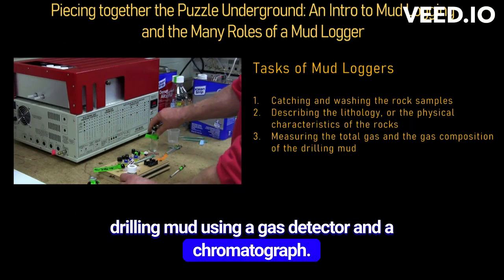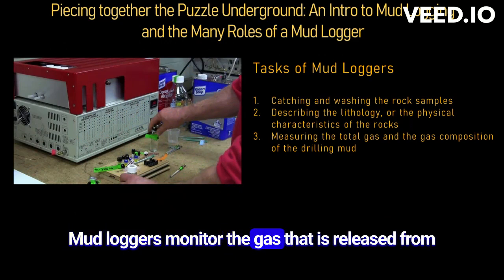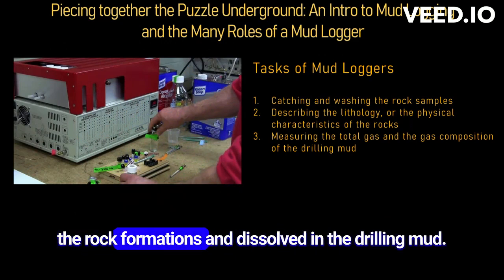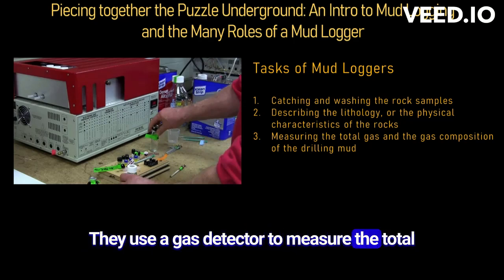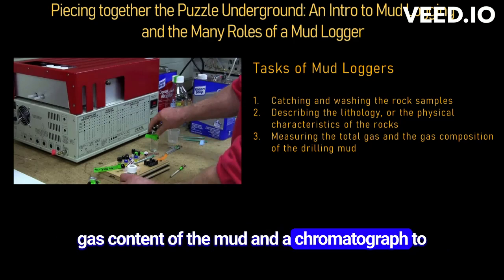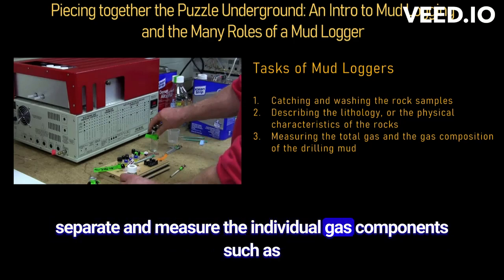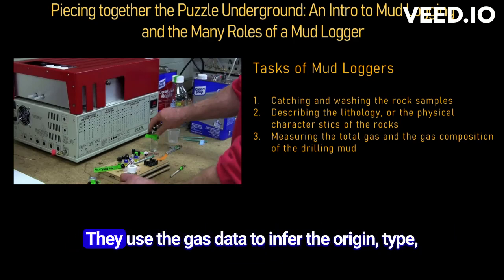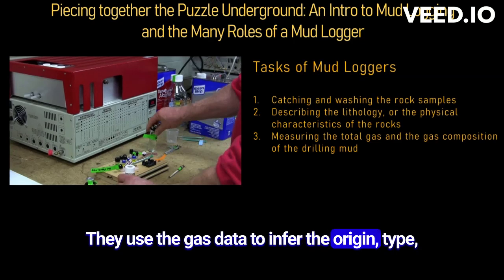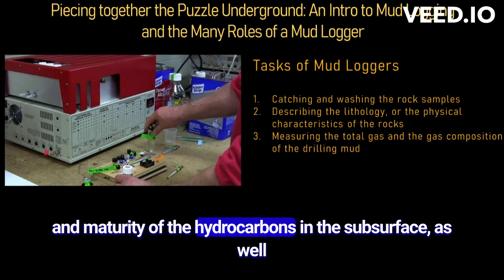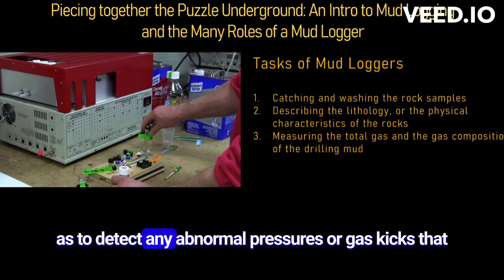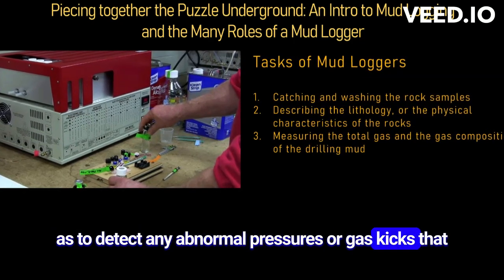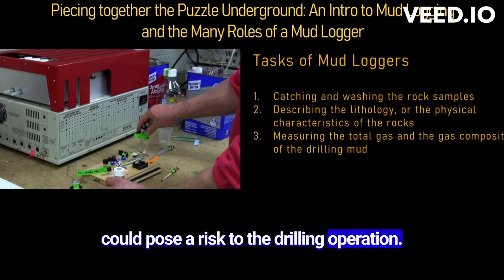Mud loggers measure the total gas and the gas composition of the drilling mud using a gas detector and a chromatograph. They monitor gas released from rock formations and dissolved in the drilling mud, using the gas detector to measure total gas content and the chromatograph to separate and measure individual gas components such as methane, ethane, propane, butane, and pentane. They use the gas data to infer the origin, type, and maturity of subsurface hydrocarbons, and to detect abnormal pressures or gas kicks that could pose a risk to the drilling operation.